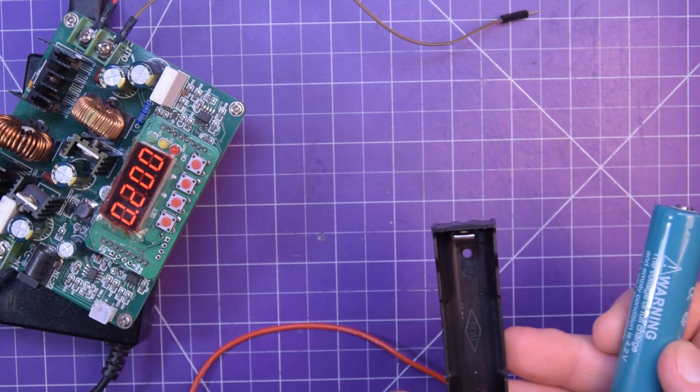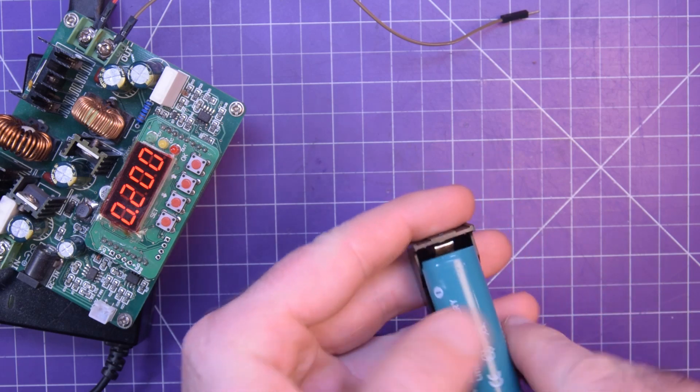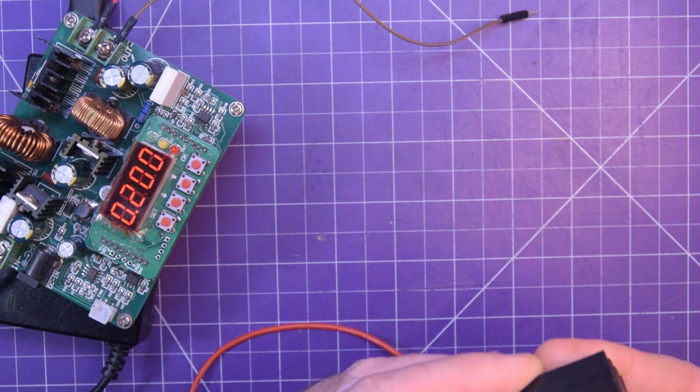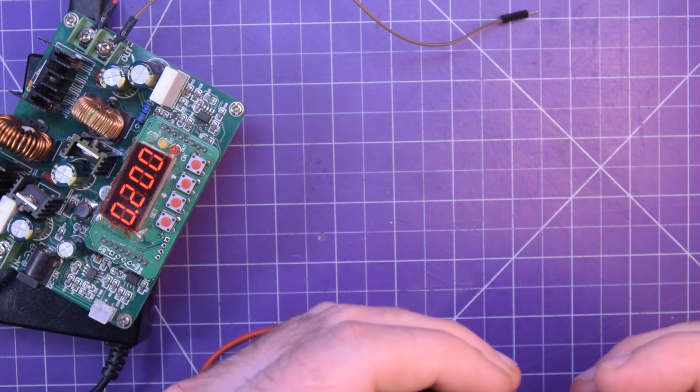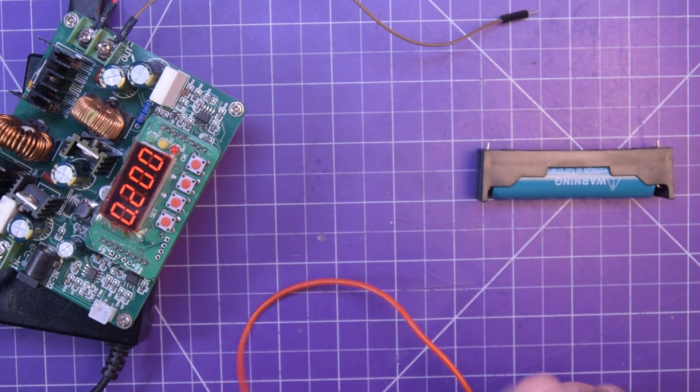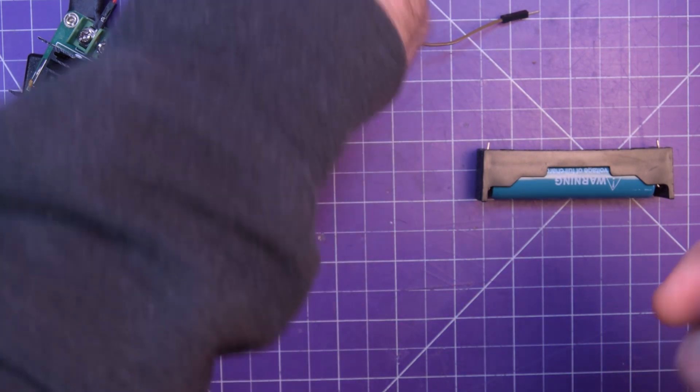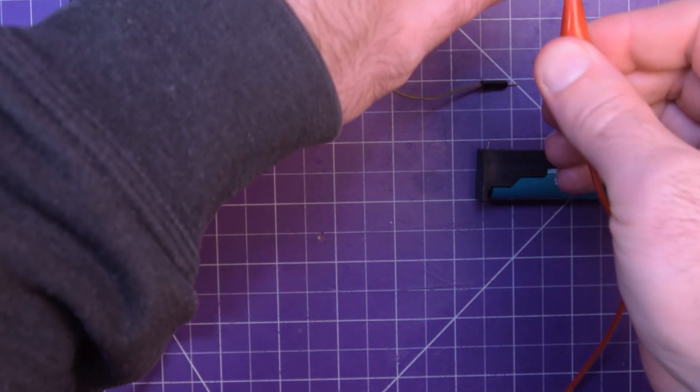So we're going to go with the brute force method. We're actually going to pop this into an empty cell holder. Oh my god, it's really stressing the plastic. These protected cells are quite a bit fatter than their non-protected counterpart.